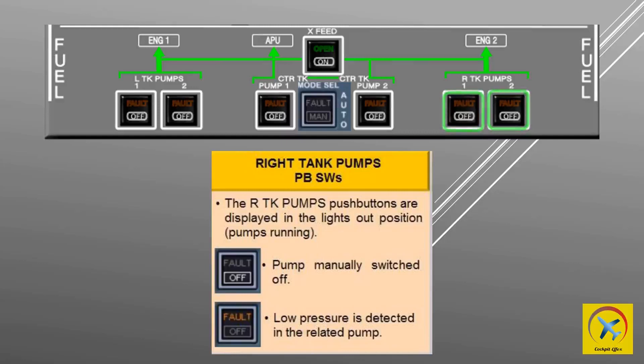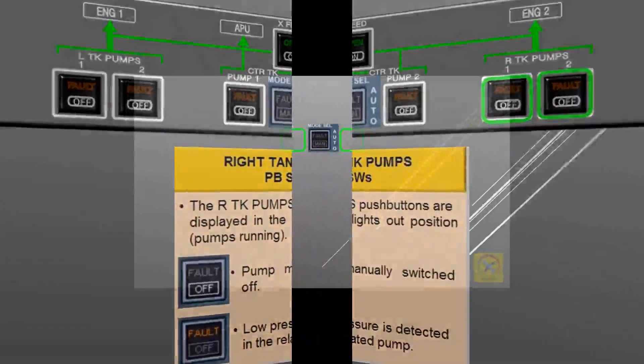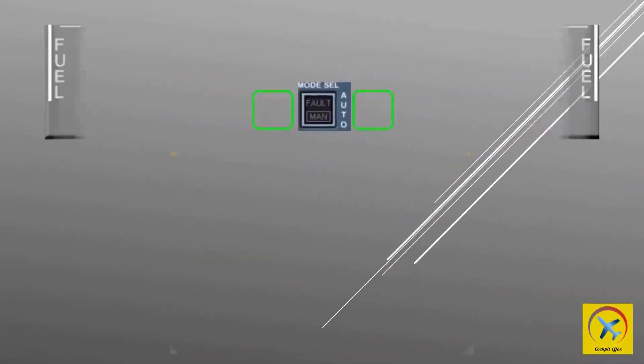The right tank pump push buttons are displayed in the lights-out position when pumps are running. An OFF white legend appears when the pump is manually switched off. If the fault light appears, low pressure is detected in the related pump.